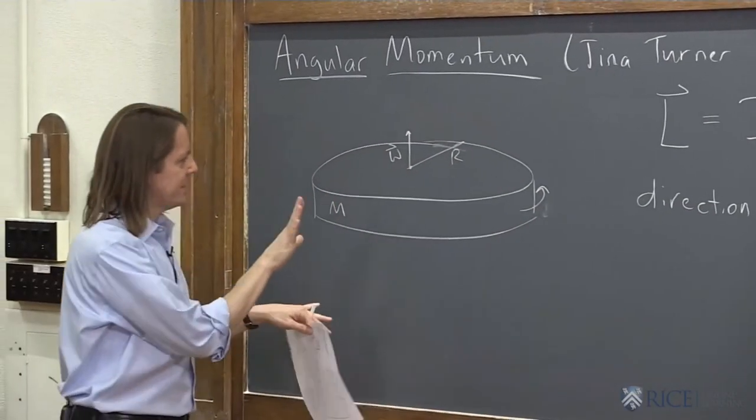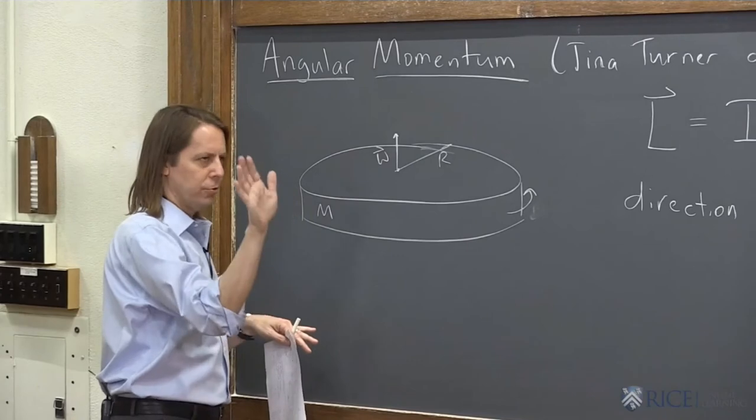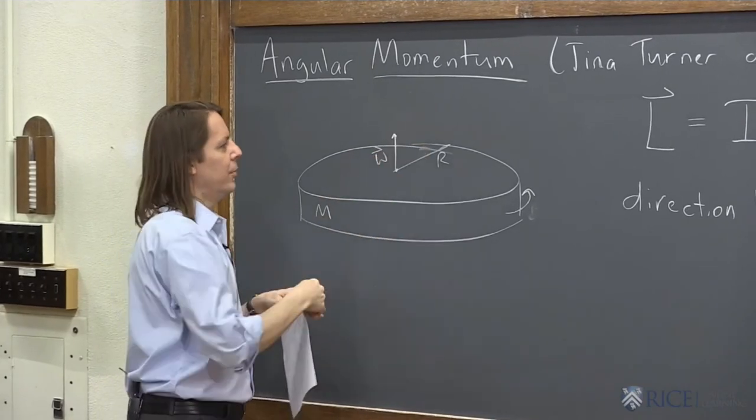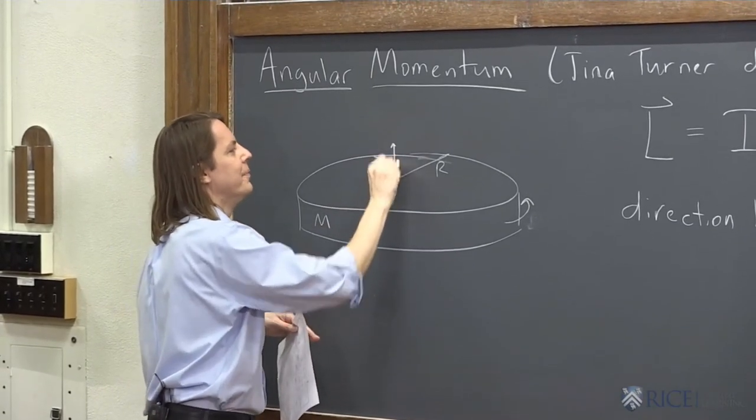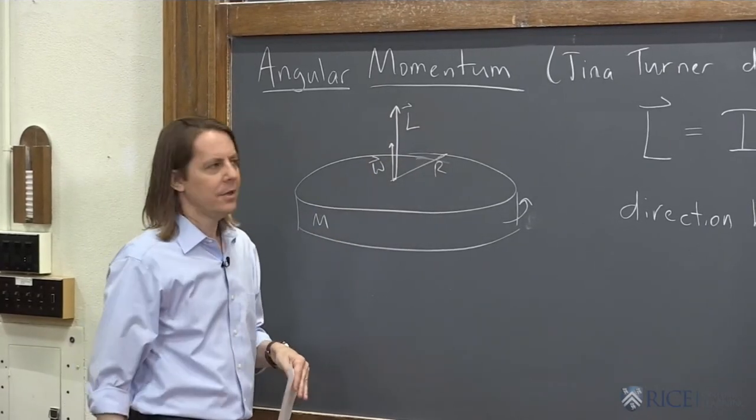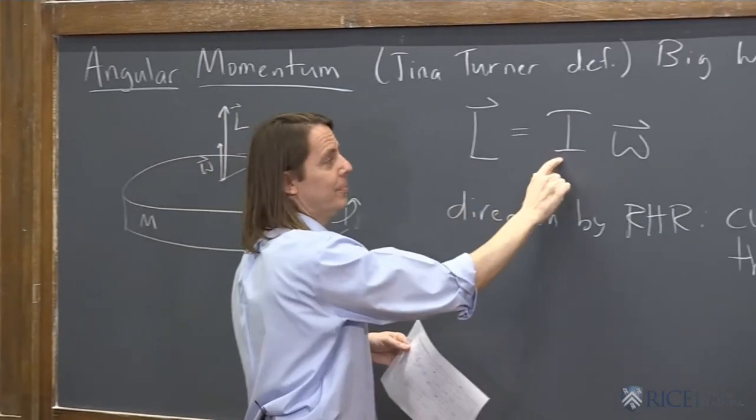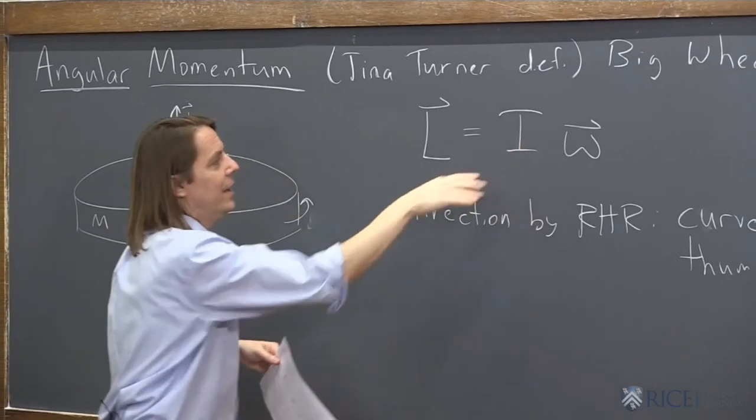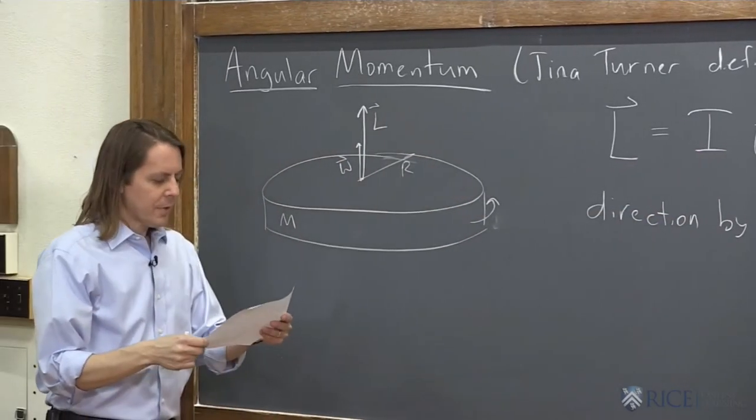So if we take this disk and see it's going around like this, use your right hand and you get that way. So you see the angular momentum is the same direction as the angular velocity. You can also see that here, right? This is a positive constant, so L is the same direction as omega.